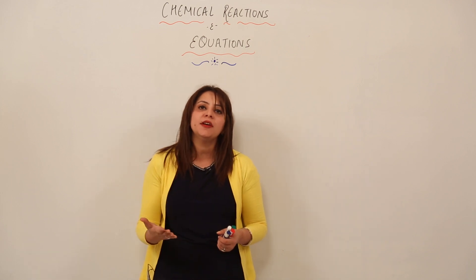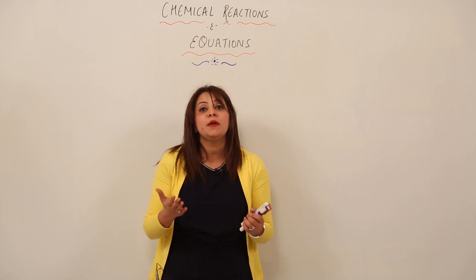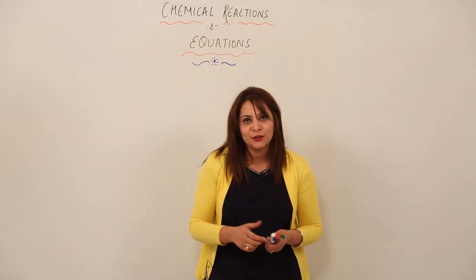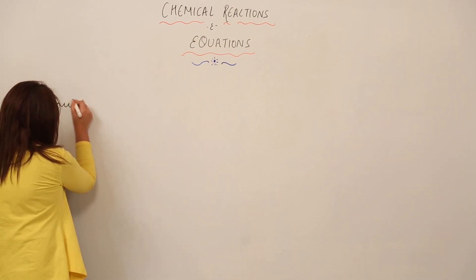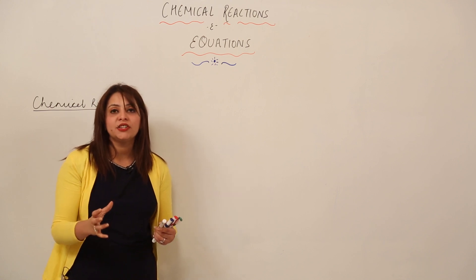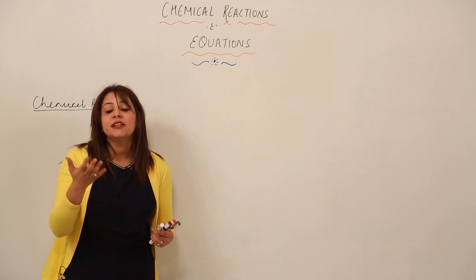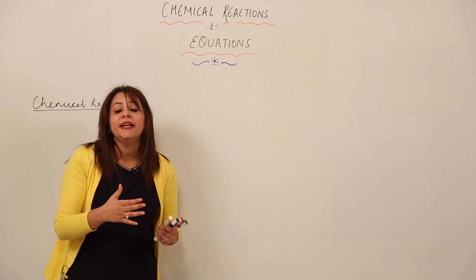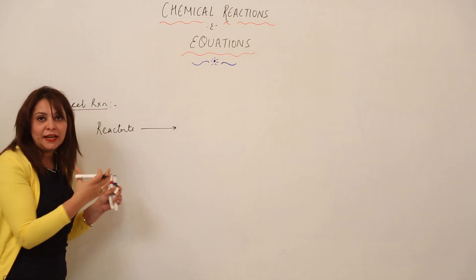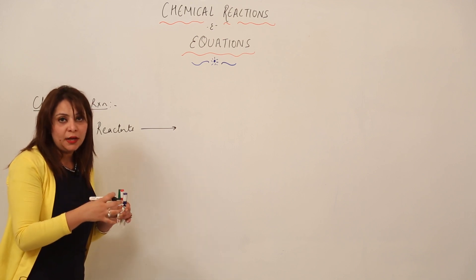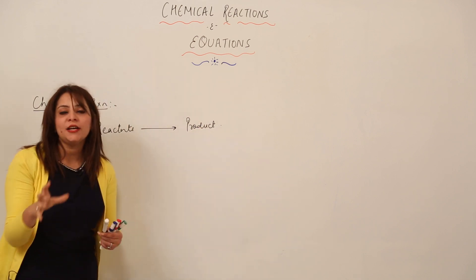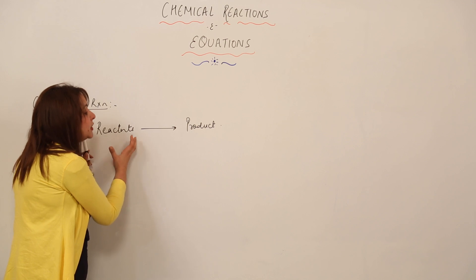Many chemical reactions occur in your daily routine — you may not be aware, but they are chemical changes happening around you. In a chemical reaction, the reactants — like tea leaves, sugar, water, and milk — undergo a chemical change and unite to form a new substance called the product. Chemical reaction revolves around these two things: reactants and products.